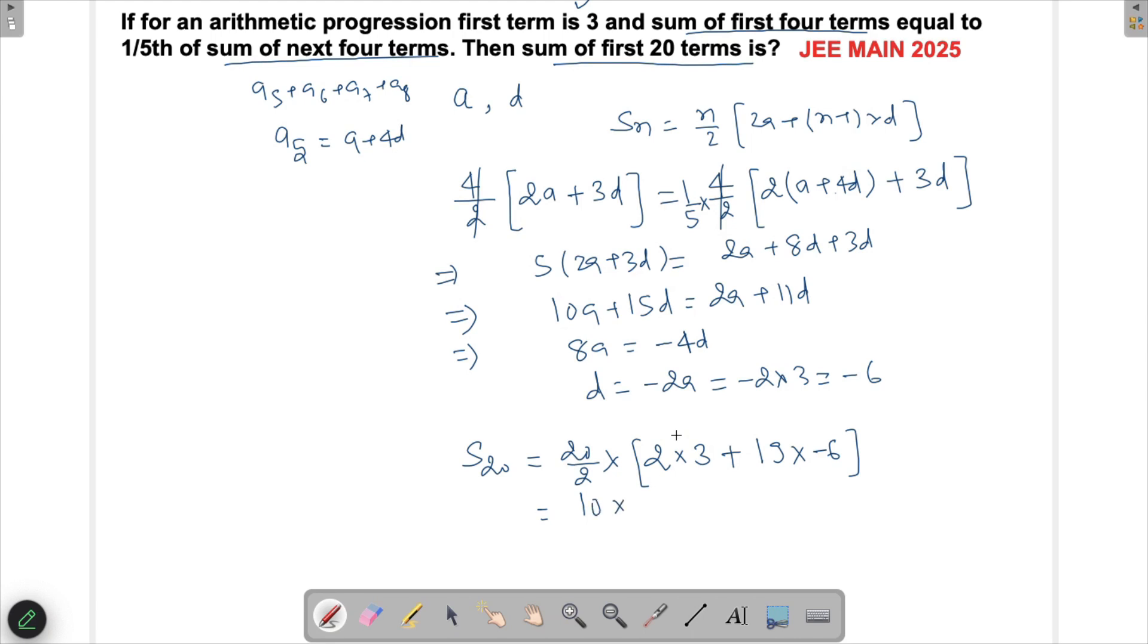This is eventually -18 times 6, which is -108. So this is the summation of this arithmetic progression.